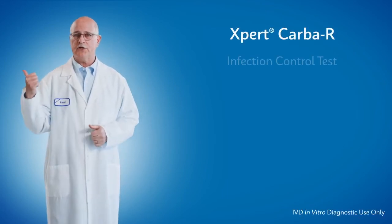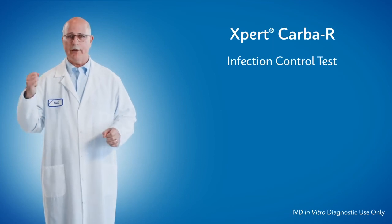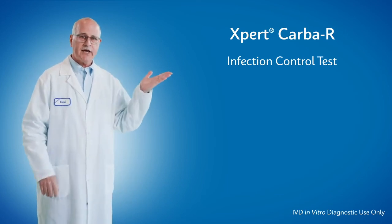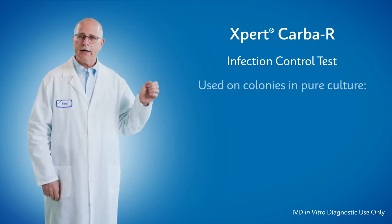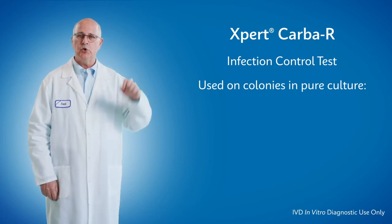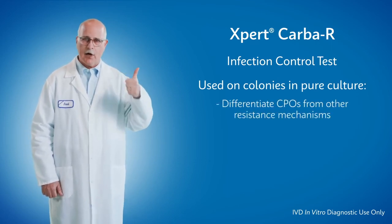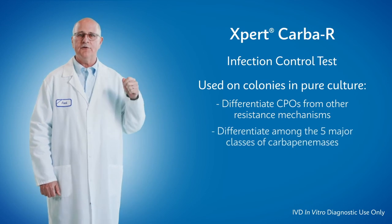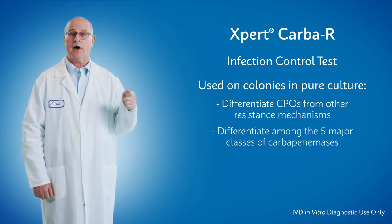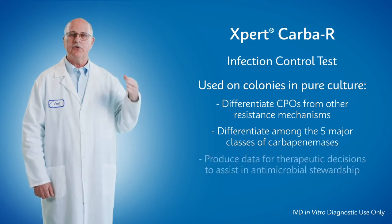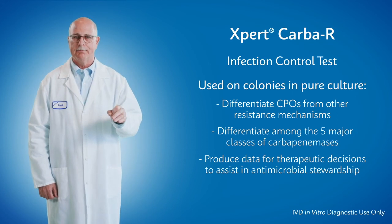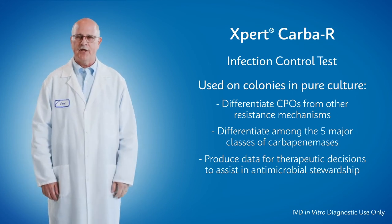Let's recap. CARB-R is both an infection control test when used with rectal and peri-rectal swabs to identify patients with carbapenemase-producing organisms. Second, CARB-R can be used on colonies in pure cultures to differentiate CPOs — that is, carbapenemase-producing organisms — from other resistance mechanisms. It can differentiate among the five major classes of carbapenemases. And it produces data for therapeutic decisions to assist in antimicrobial stewardship. Thanks for listening. We'll see you next time.